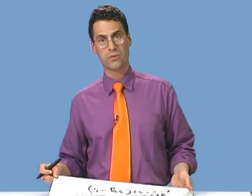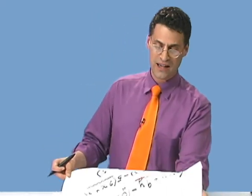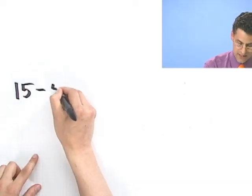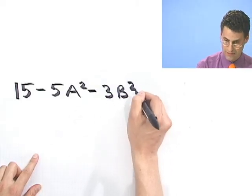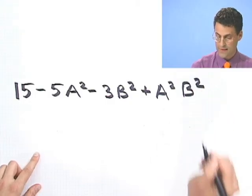Now, the grouping method doesn't always work. But it's a great thing to think about and a great thing to try, especially if you have terms that sort of have similar things in pairs. Great thing to try. This is a little key. Let's try one last example. So you can see this in action. Let's suppose that we have 15 minus 5a squared minus 3b squared plus a squared b squared.